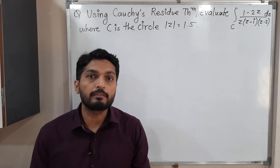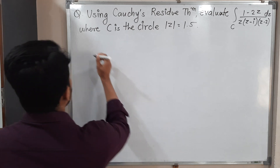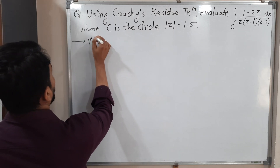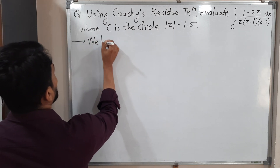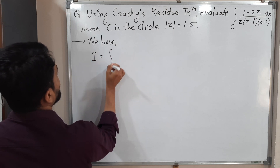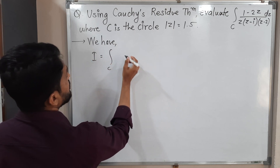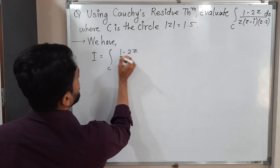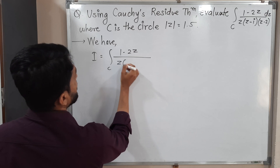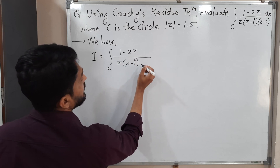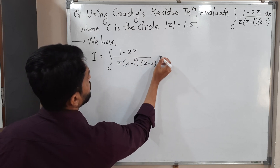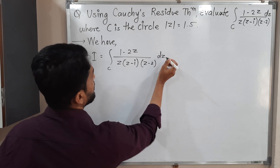So let us write the given integral first. We have I is equal to the integration over C of (1 minus 2Z) upon Z, times (Z minus i), times (Z minus 2), dZ.